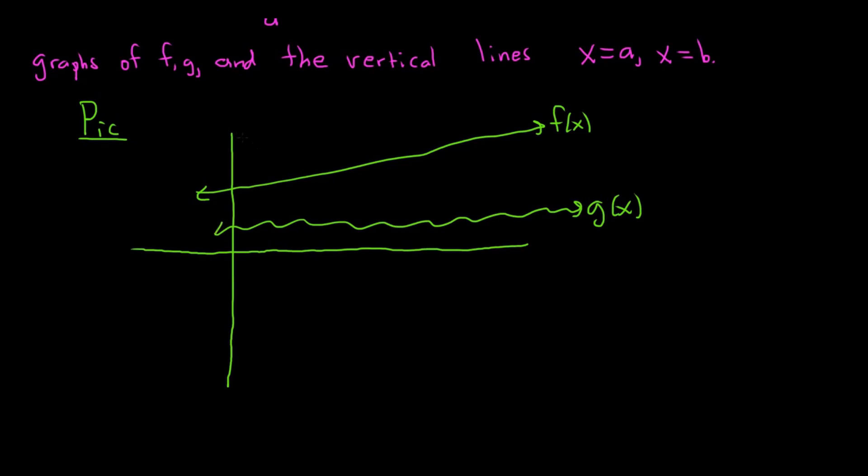And I'm putting them in quadrant one just for convenience, just to make it easy to draw. They could be anywhere, right? These two graphs could be anywhere. As long as g is smaller than f, life is good. So this will be maybe a here.